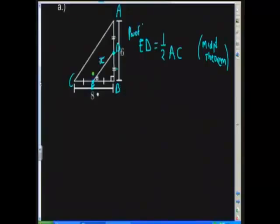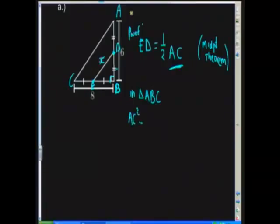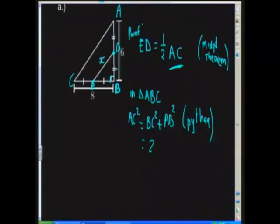You need to give a reason that backs up your statement. So we know that ED is equal to a half of AC. Now, we don't have side AC — we've got side AB and side BC, but not AC. But if you notice, in triangle ABC we have a 90-degree angle, so that means we're dealing with a right-angle triangle. Therefore, we can say in triangle ABC, from Pythagoras, AC squared is equal to BC squared plus AB squared.